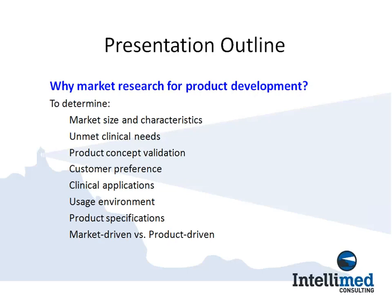Whether the market wants or needs this product or not, and whether the market size and characteristics will support the cost and effort to develop a given product — these are the key questions. Are there any unmet clinical needs? How will we validate the product as we move along, and particularly how will we validate the concept before we get started? How will we determine customer preferences, clinical applications, and usage environment? All these things lead to the product specification. We always want to remember that we use market research to keep us market driven versus product driven.